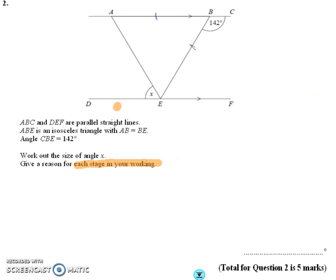So when we answer this, we are going to make sure we give a reason. So I'm going to say the first thing I'm going to work out is this angle here. So I'm going to work that angle out. Angle ABE, which is 180 degrees minus the 142 that's given, because here we've got a straight line going across.